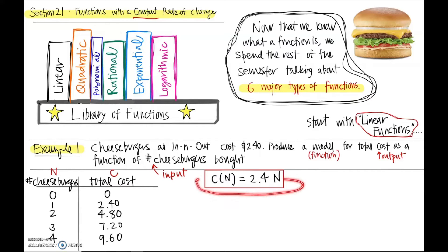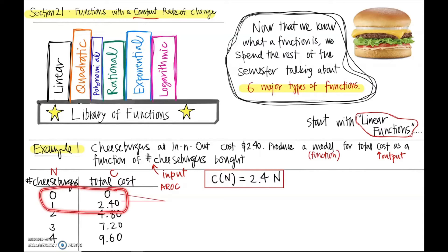We've done what they asked us to do — we produced a model for the total cost as a function of the number of cheeseburgers bought. Now we're going to dive a little deeper and look at average rates of change. If I want to find the average rate of change between two data points, I take the difference of the outputs over the difference of the inputs, and I get 2.40 minus 0 over 1 minus 0, which gives 2.4 over 1, which equals 2.4.